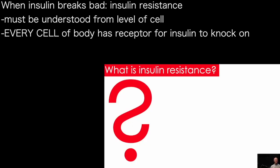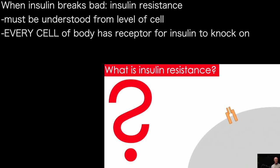Now we understand what insulin is. We need to understand what happens when it breaks bad — when it turns into the villain. That's what we'll define now. To understand insulin resistance, we want to understand it from the level of the cell, because insulin resistance is a cellular phenomenon, and this could be any cell in the entire body. Every cell of the body has a little door for insulin to come and knock on, called the insulin receptor.